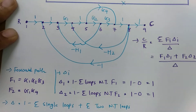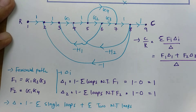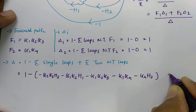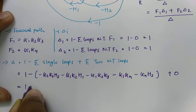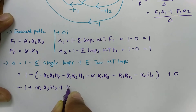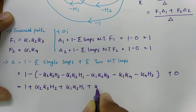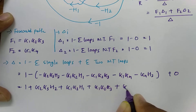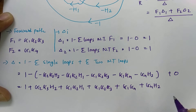I have identified all the loops and there are no two non-touching loops, so that term is 0. Simplifying δ: δ = 1 + G2·G3·H2 + G1·G2·H1 + G1·G2·G3 + G1·G4 + G4·H2.